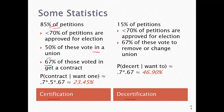On the decertification side, also less than 70% of petitions for elections are approved. When an election is approved, 67% of workers vote to remove or change unions. So 70% times 67% is almost 50%, meaning about 50% of the time, when workers are interested in getting rid of their union or swapping unions, they are successful in doing so.